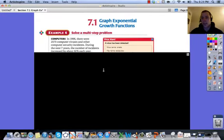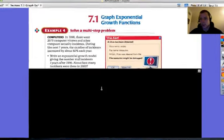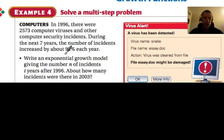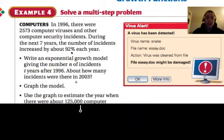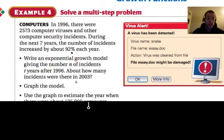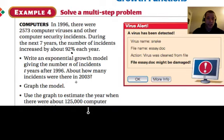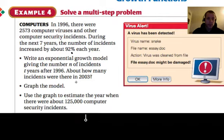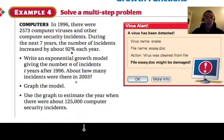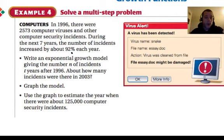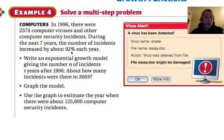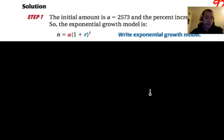So we're going to look at a real-life situation here where we have exponential growth. This problem is saying that in 1996, we have 2,573 computer viruses, and over the next seven years, the amount of computer virus incidences that are reported is going to increase 92%. So what we're going to be asked to do is, number one, write an equation that represents this model. Number two, we're going to graph the model. And number three, we're going to use the graph to estimate the year when there was 125,000 computer security incidences.